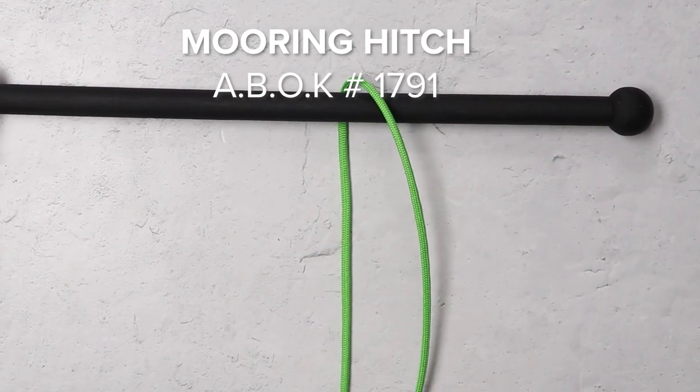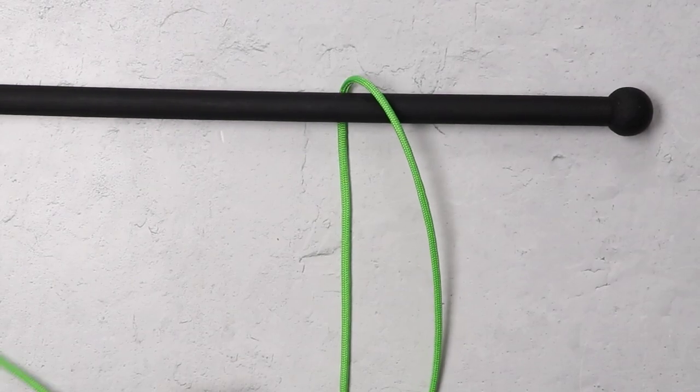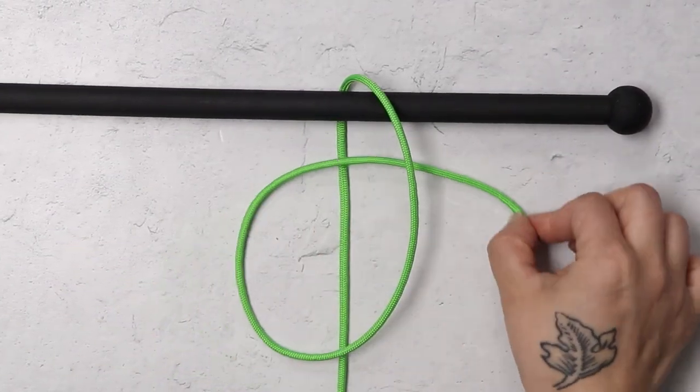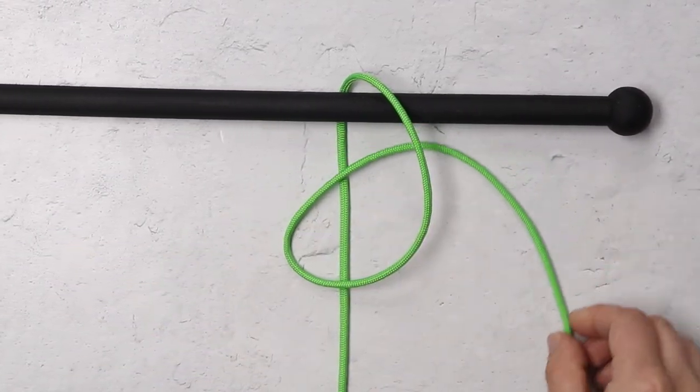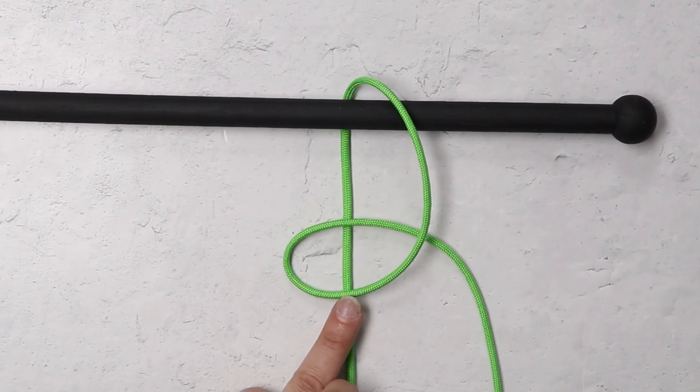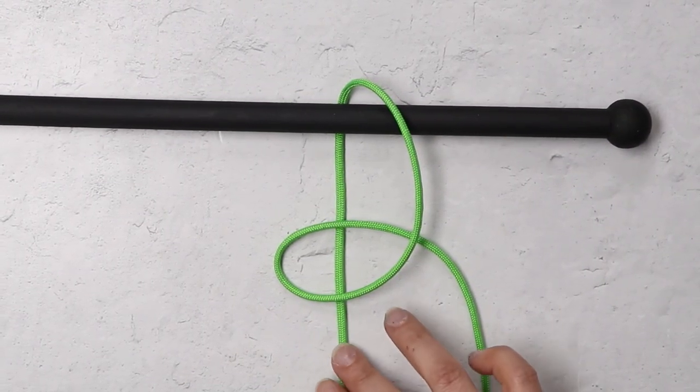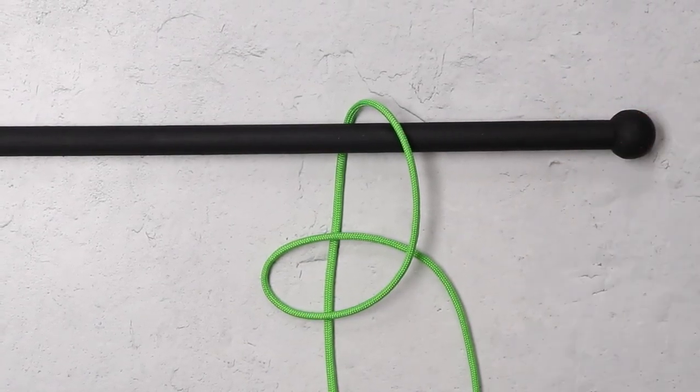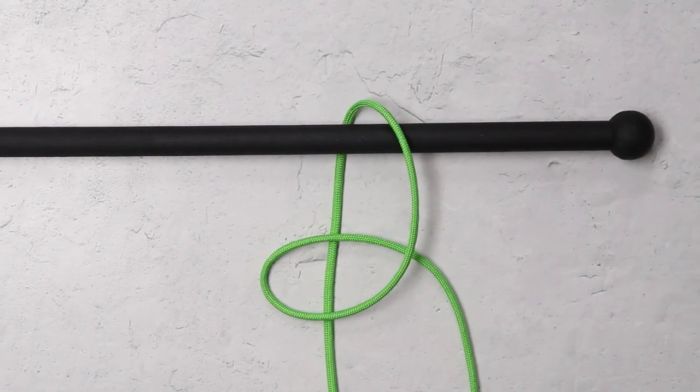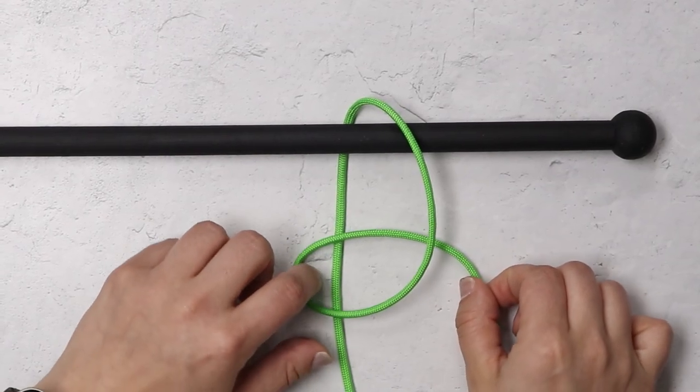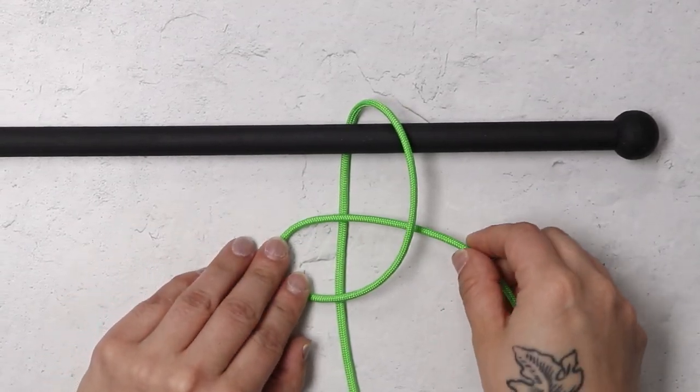To start your mooring hitch, you'll want to take one end of your cord and pass it over the top of where you'll be hitching to. I'll then take my right hand working strand and I will make a loop by passing it over the top of my stationary strand and back through the loop that now formed from my working end.